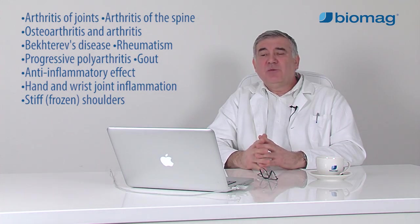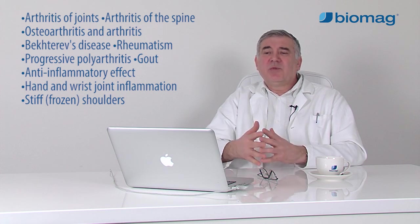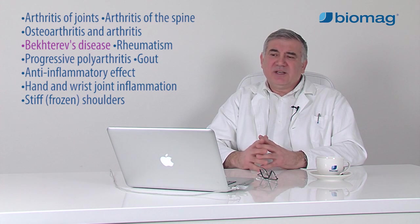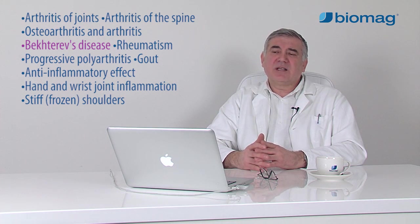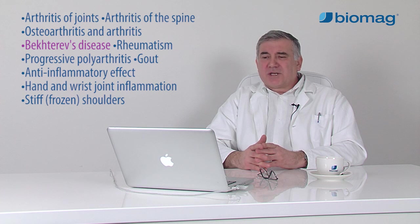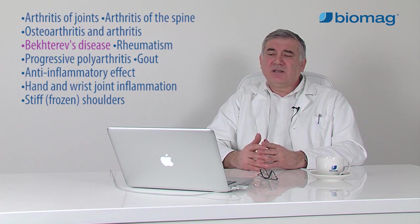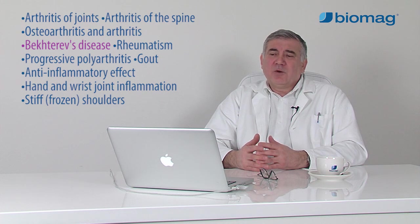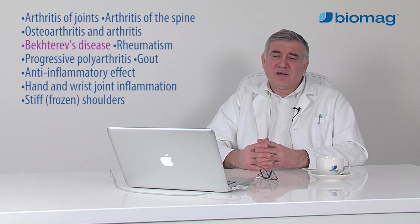In non-infectious arthritis of the joints and spine, diseases are inflammatory and are caused by various sources with a significant contribution from the immune factor. These include arthritis caused by metabolic problems, gout, psoriasis, etc. The most common arthritis with a significant contribution from the autoimmune factor is rheumatoid arthritis and Becterose disease. The exact cause of these diseases is not known.